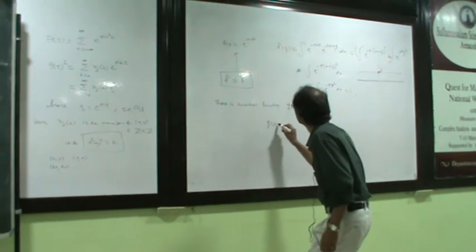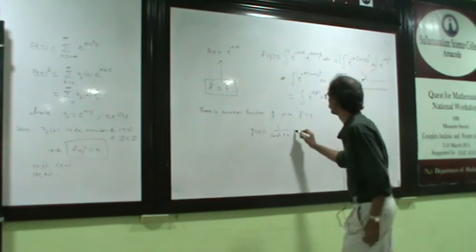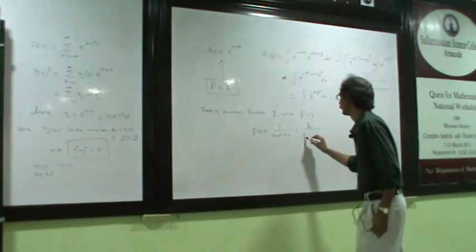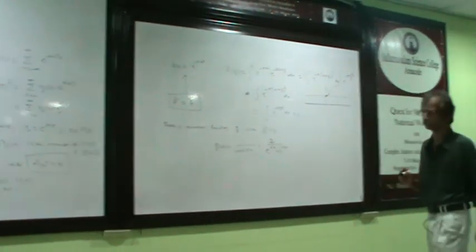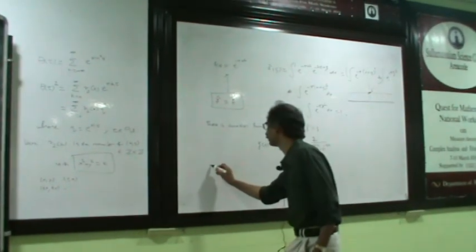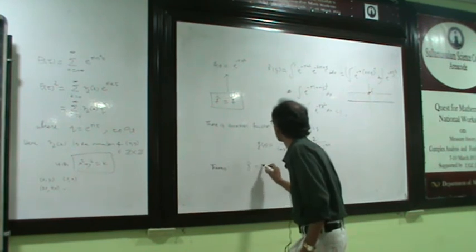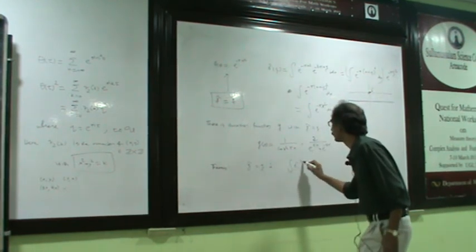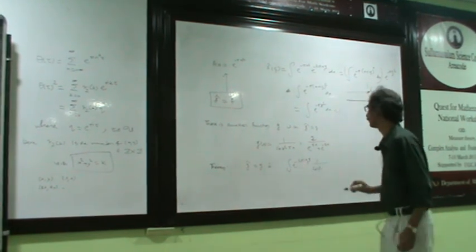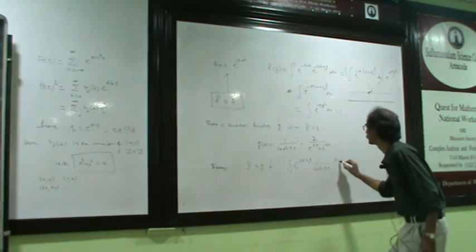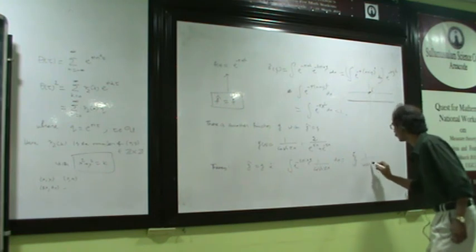So this function is given by 1 over 2 over e power πx plus e power minus πx. So this is my function. When I claim, when I claim, I can make it as a theorem if you want. So that is g. That is integral e power minus 2πi, it gets xi. So now where, upper volume cosine πx, dx is the same thing, upper volume cosine πx.